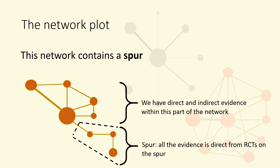Sometimes, we might see a spur off the main network. This is where interventions are connected to the network by a chain of evidence. Some parts of the network are based on both direct and indirect evidence in loops, and other parts will only have direct evidence, so assumptions can be tested for some parts of the network, but not others.